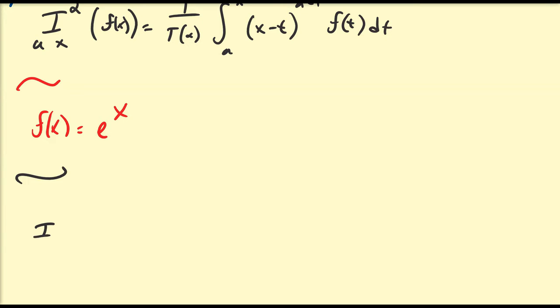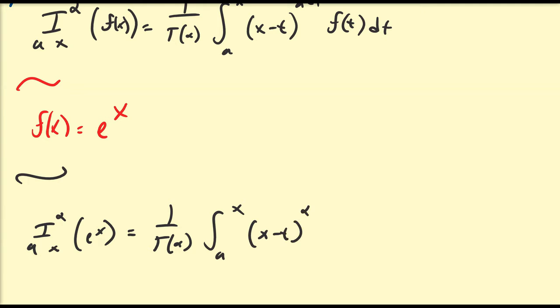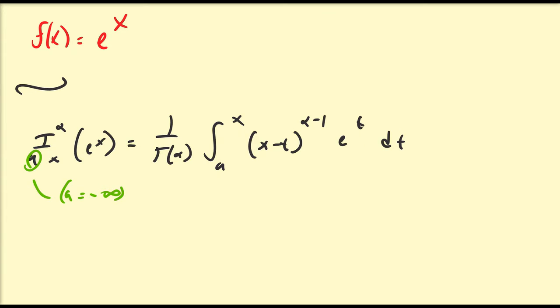The alpha integral from A to x of e^x is going to be equal to 1 divided by gamma(alpha) times the integral from A to x of (x − t)^(alpha − 1) times e^t dt. In order to eliminate any arbitrary constant c, we're going to be taking our base point A to be equal to minus infinity. We're going to assume that when we have a leading coefficient a, it is positive, and then we can reverse if we need to.